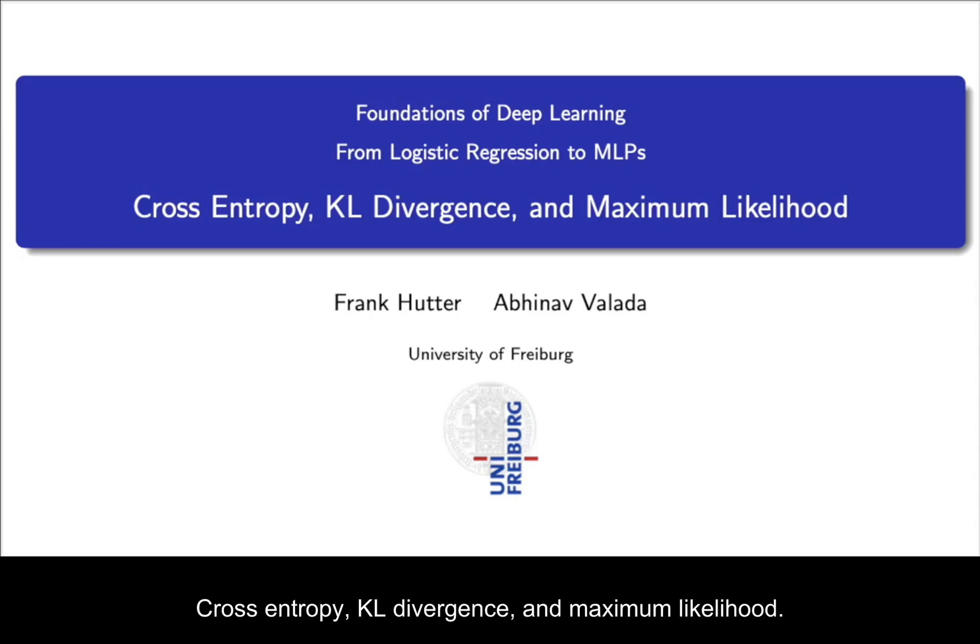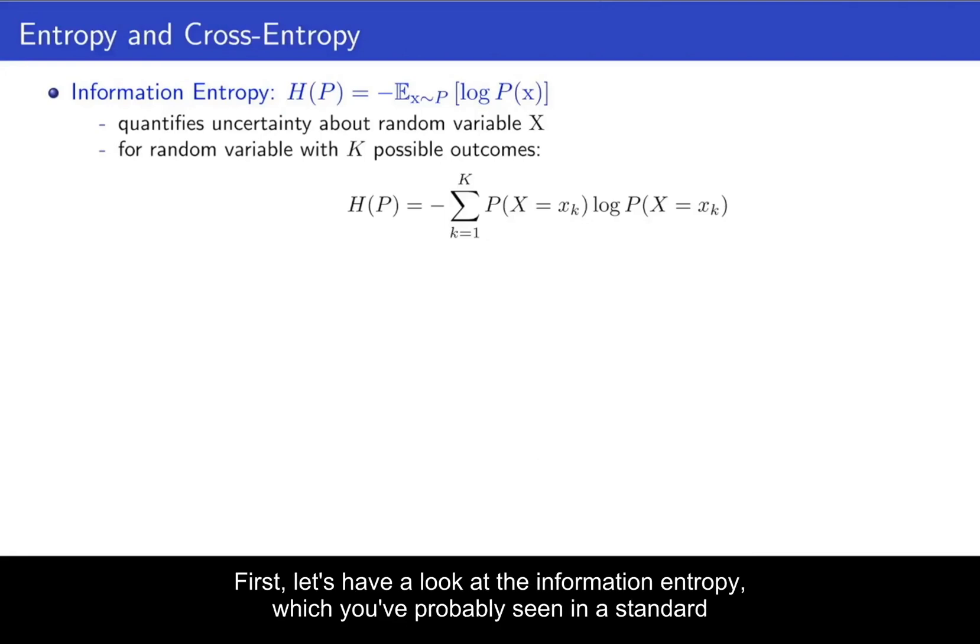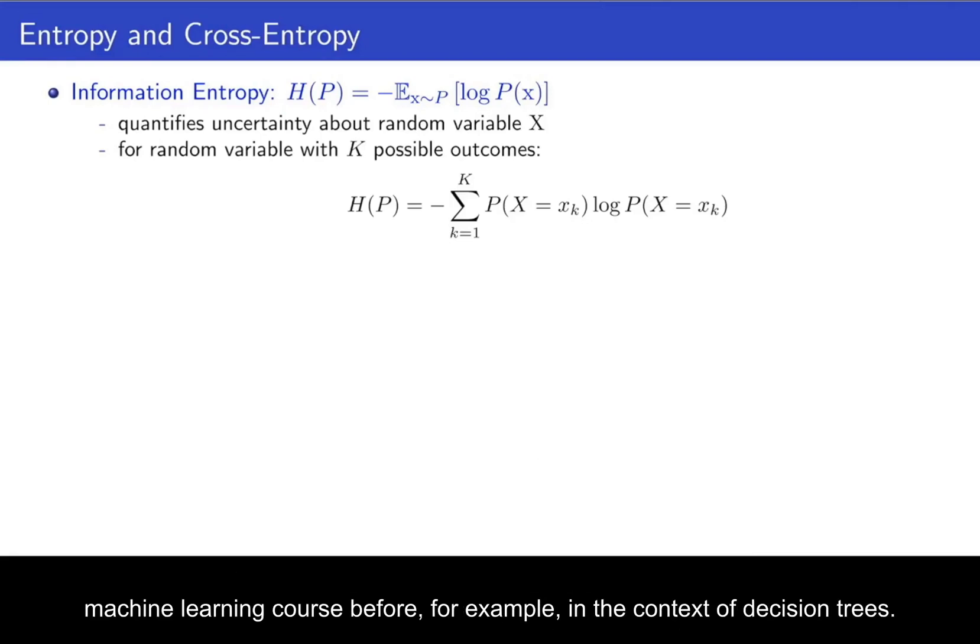Cross-entropy, KL divergence, and maximum likelihood. Let us start by recapping some concepts from information theory. First, let's have a look at the information entropy, which you've probably seen in a standard machine learning course before, for example, in the context of decision trees.